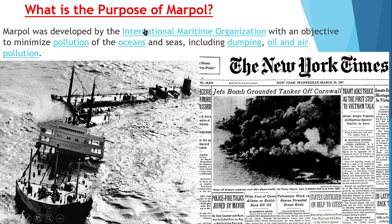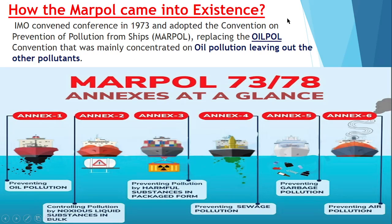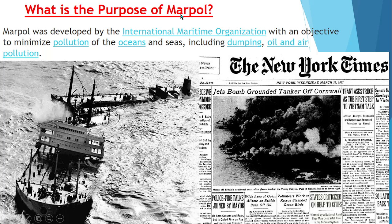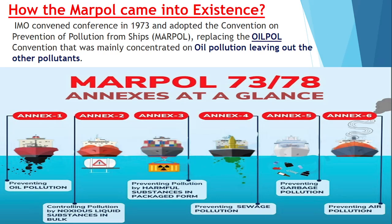MARPOL is mainly focused on minimizing pollution in the ocean and sea with respect to oil and air. As you can see in the pictures here, this is the Torrey Canyon incident which happened in 1967. This was the incident which led to the fast-track development of MARPOL. Before MARPOL, what was there? There was an Oil Pollution Convention. What is the difference between MARPOL and the Oil Pollution Convention? The difference was that the Oil Pollution Convention was only talking about oil pollution.